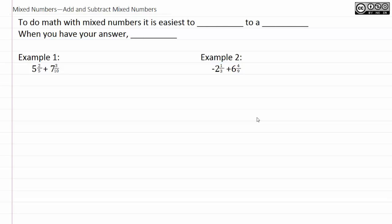For this video, I'm going to teach you how to add and subtract mixed numbers. To do math with mixed numbers, it is easiest to convert to an arithmetic problem. You'll see what I mean by this shortly. Using some basic arithmetic, we can actually turn two mixed numbers into one mixed number. And your answer will already be mixed, so when you have your answer, you want to leave it as a mixed number.